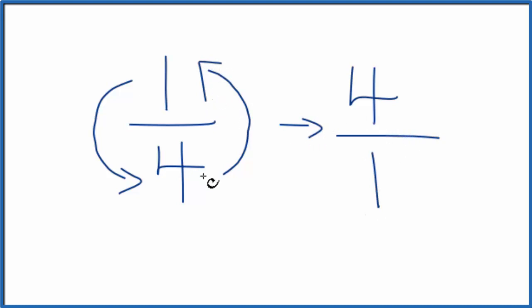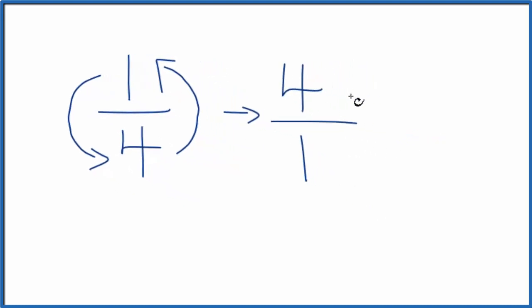So the reciprocal for one-fourth, that's four over one. And we rewrite that as four, since four divided by one is four. So the reciprocal of one-fourth, that's four.